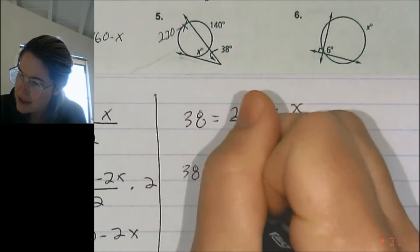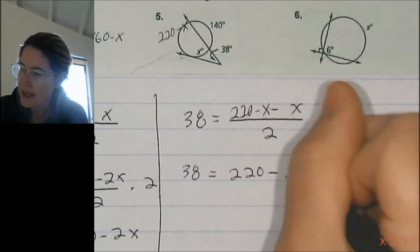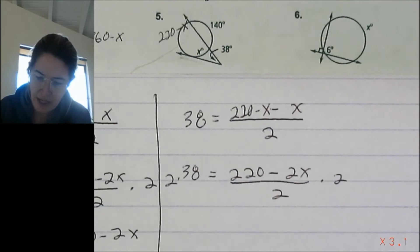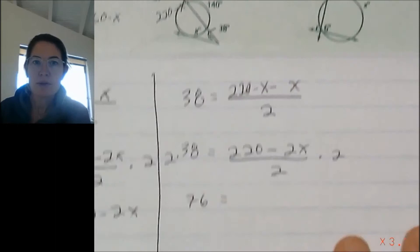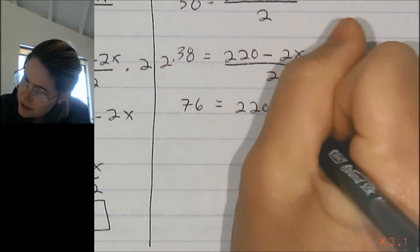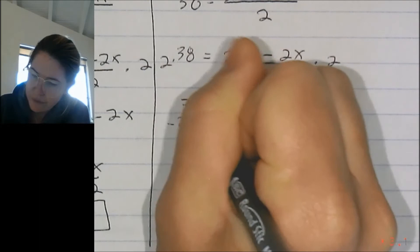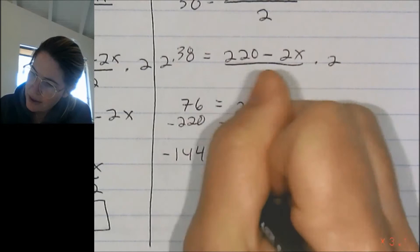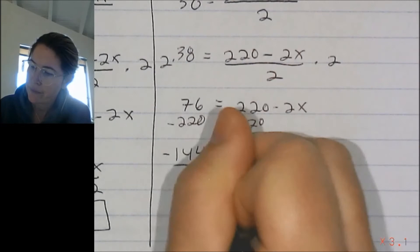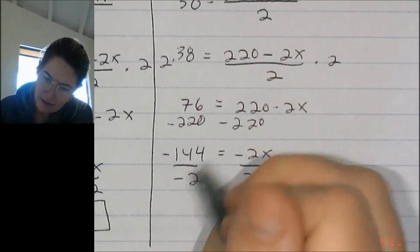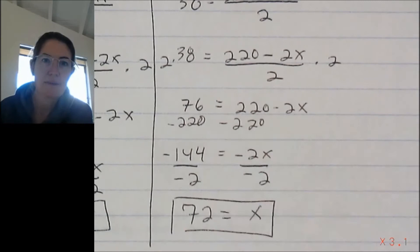Now solving: 38 equals (220 minus x minus x) over 2, which is (220 minus 2x) over 2. Multiply both sides by 2: 76 equals 220 minus 2x. Subtract 220 from both sides: negative 144 equals negative 2x. Divide by negative 2, and x equals positive 72 degrees.